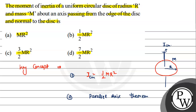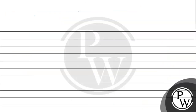Second, use the parallel axis theorem. The parallel axis theorem states: for any axis parallel to the one passing through the center of mass, I equals I_cm plus Md². So I equals I_cm plus Md².